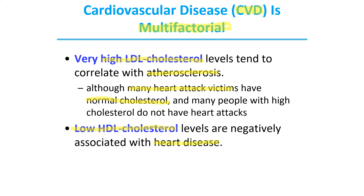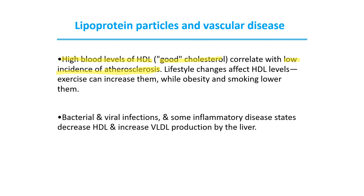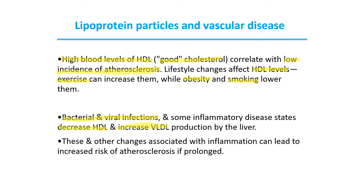Low HDL — the good cholesterol — also results in heart disease. High blood levels of HDL correlate with low incidence of atherosclerosis, so a person with high HDL has a lower chance of atherosclerosis. Lifestyle changes affect HDL levels: regular exercise raises HDL, while obesity and smoking lower it. Certain bacterial or viral infections and some inflammatory diseases also cause a decrease in HDL and an increase in VLDL, which increases the risk of atherosclerosis.